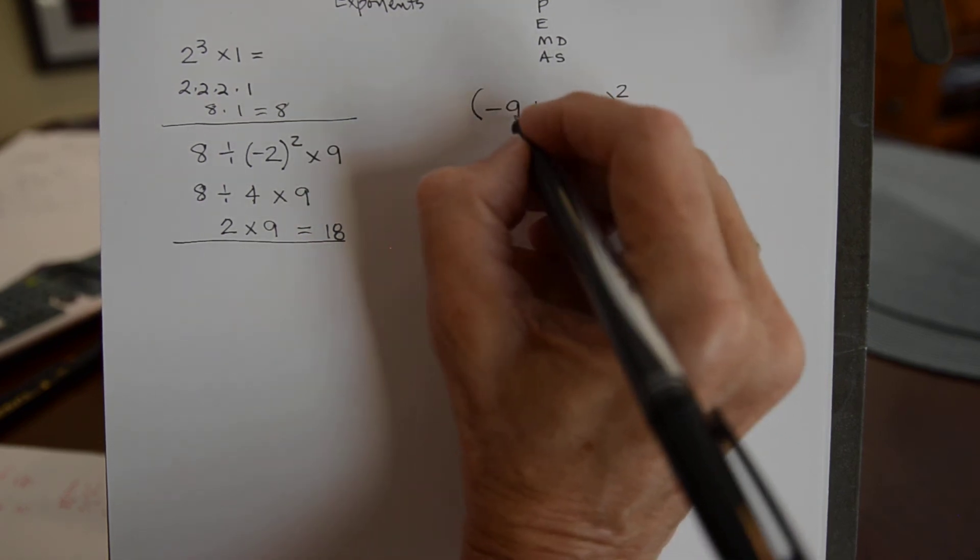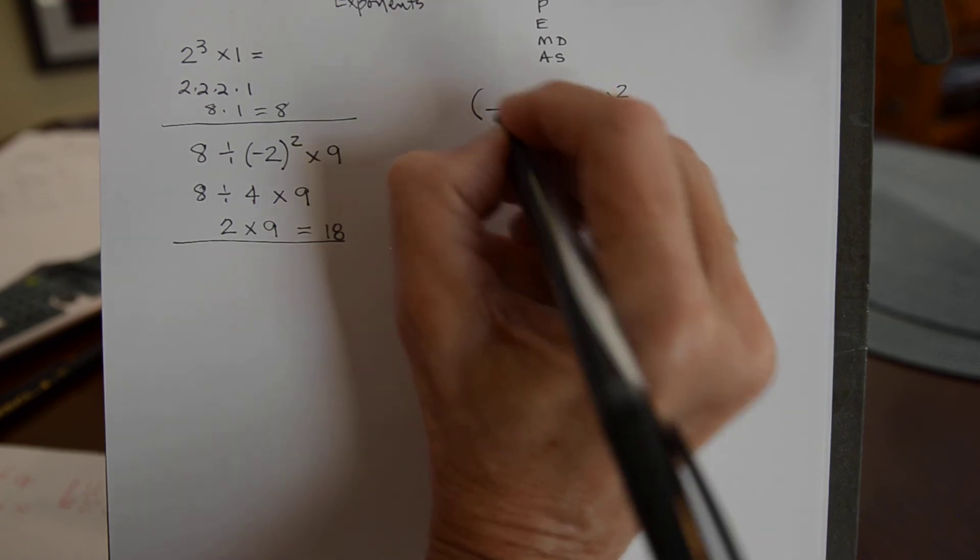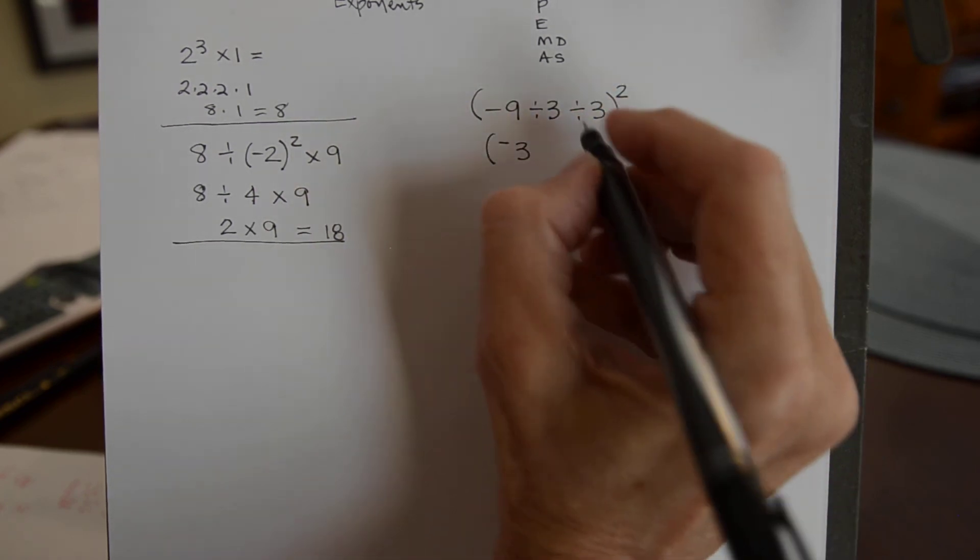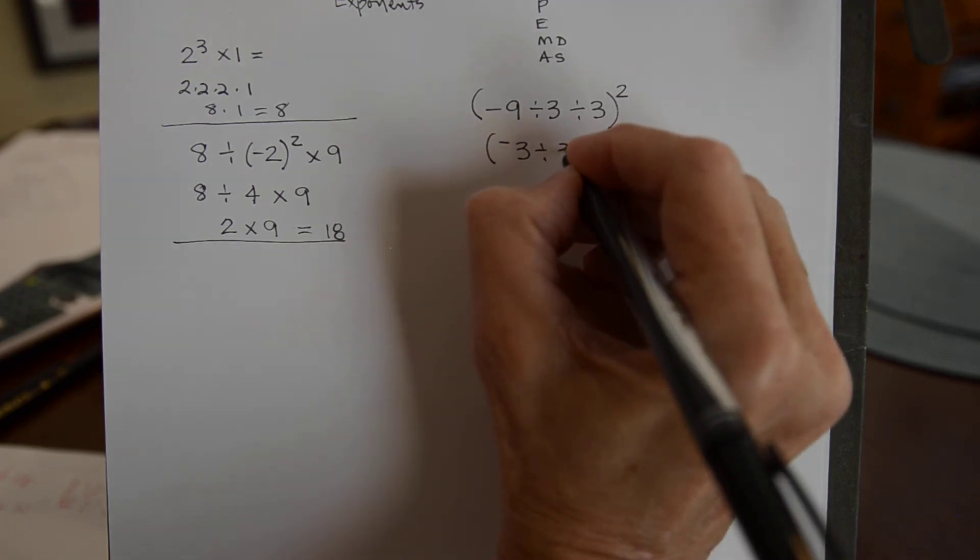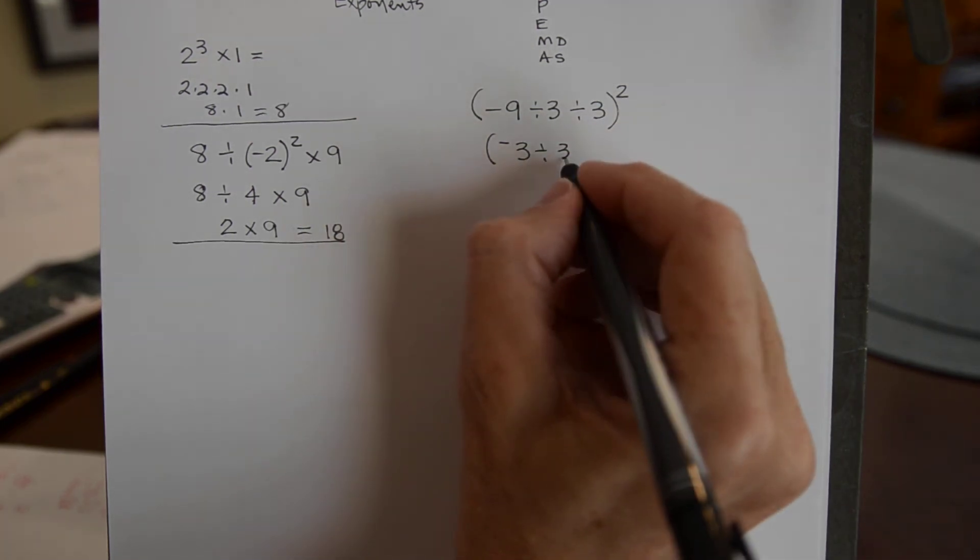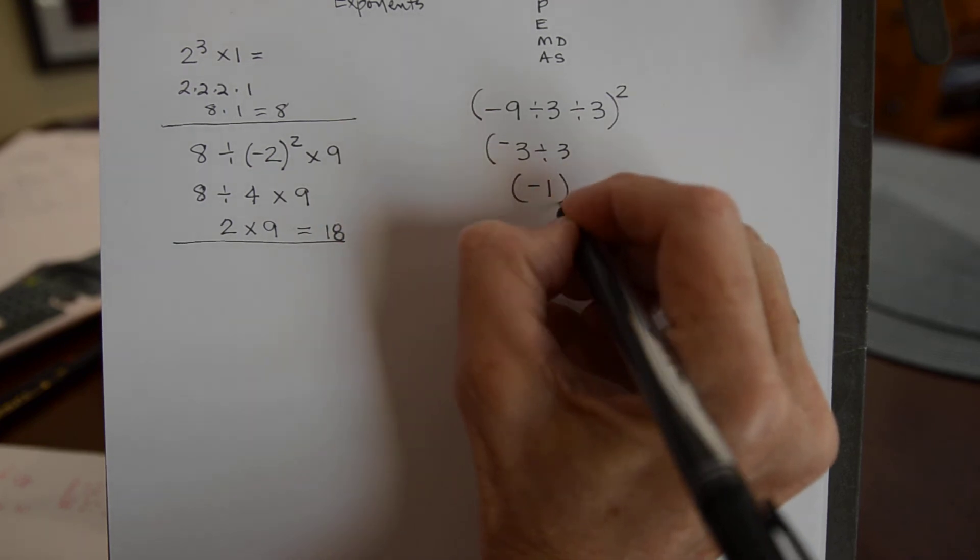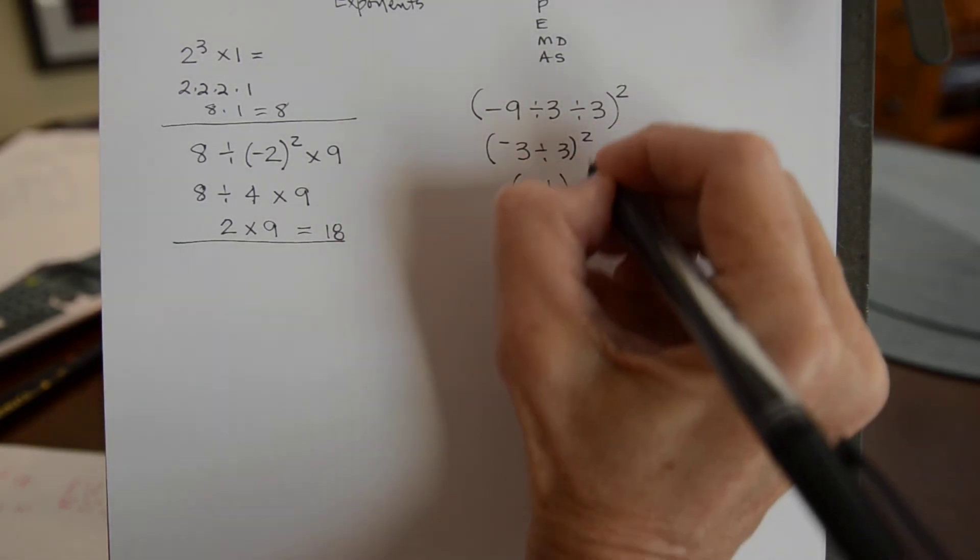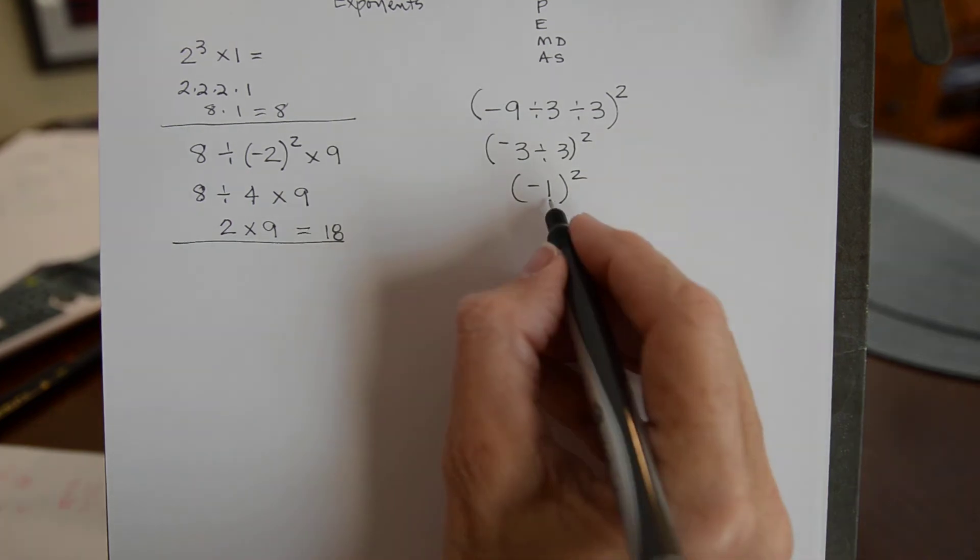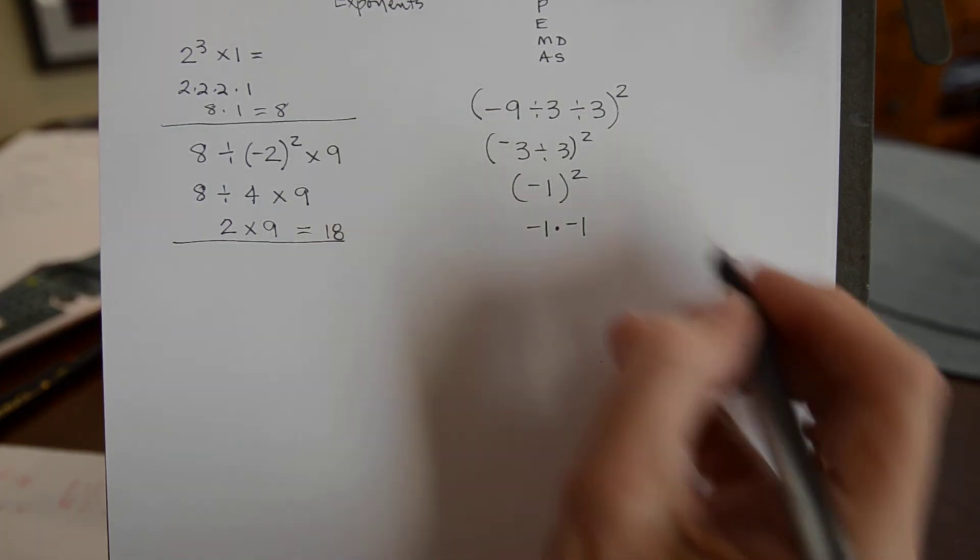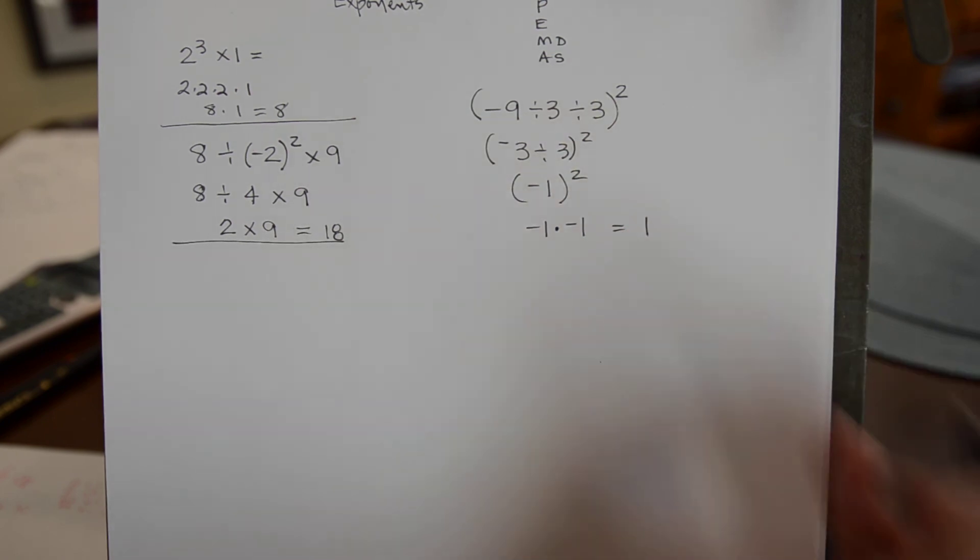So negative 9 divided by 3. That is going to generate 3 goes into 9 3 times but because there's a negative sign it stays negative. I'll go ahead and keep the parentheses to show this division. And negative 3 divided by a positive 3 is a negative 1. I'll keep that and I need to square it. So negative 1 times negative 1 equals a positive 1.